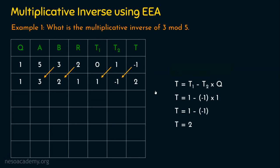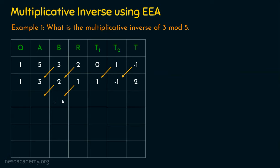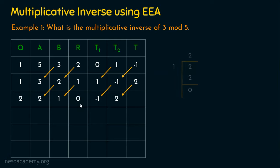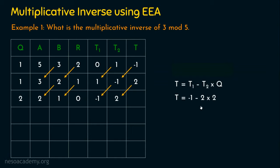Shifting again: A takes 2, B takes 1, T1 takes −1, T2 takes 2. Run the algorithm again: A mod B is 2 mod 1. 2 divided by 1 gives quotient 2 and remainder 0. For T: T1 is −1, T2 is 2, Q is 2, so T = −1 − 2 × 2 = −5. The third row is also complete.